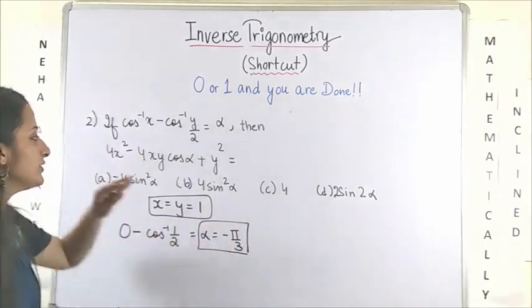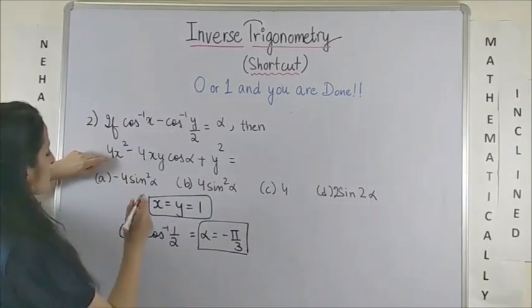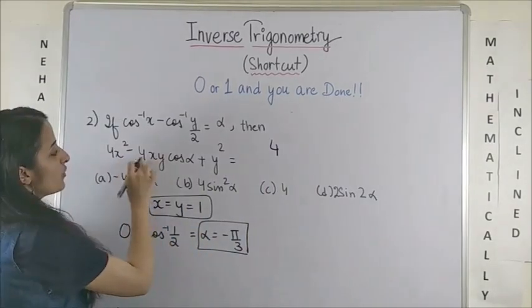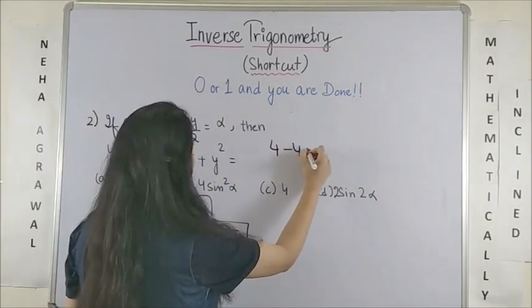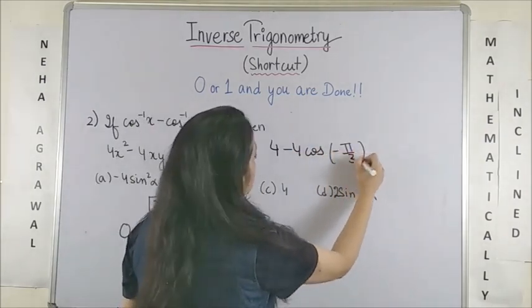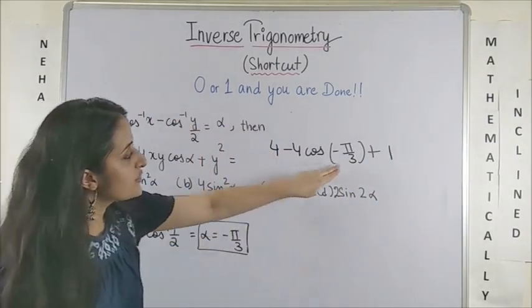Now, all I need to do is substitute x, y and alpha in this expression. So my x was 1. So this makes it 4 minus 4 cos of alpha which is minus pi by 3 plus y square which is again 1.